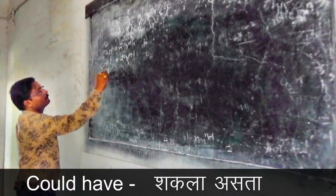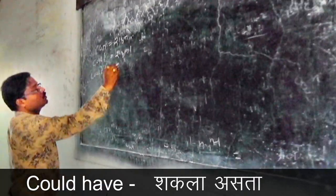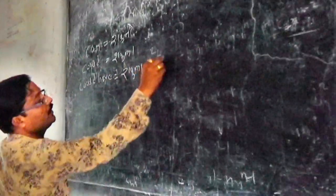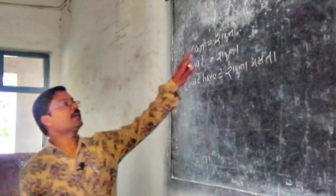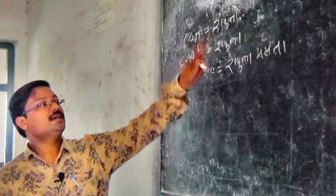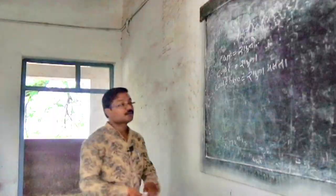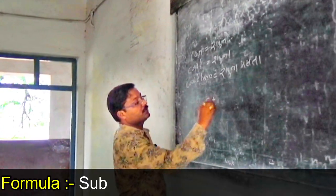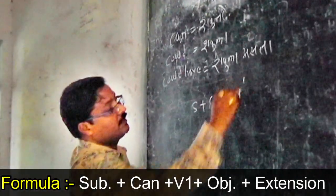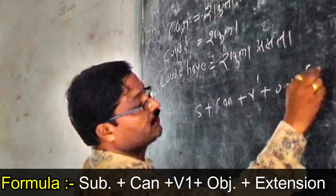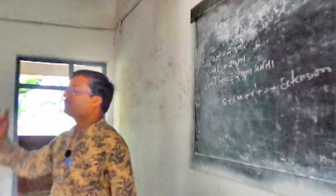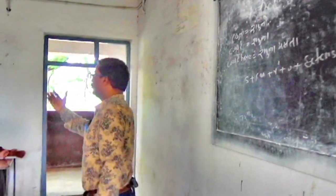It is 'could have'. In Marathi, could have means 'shakla asta'. If anybody belongs to Hindi, can means 'shaka' or 'shakta'. If you think about 'can' and you want to speak in English: Subject plus can plus V1 plus object plus extension.